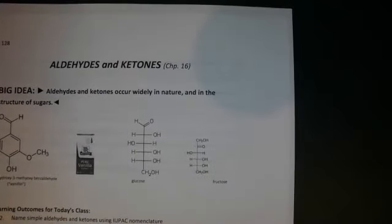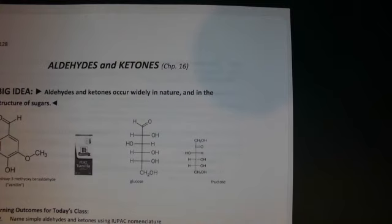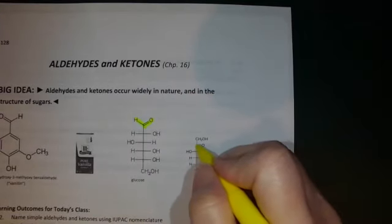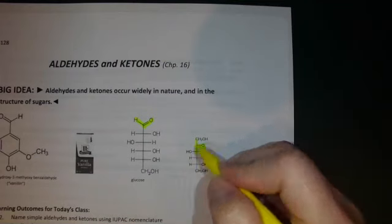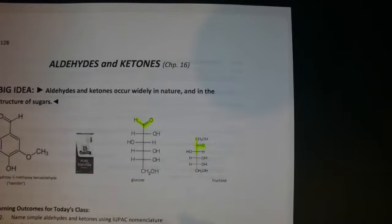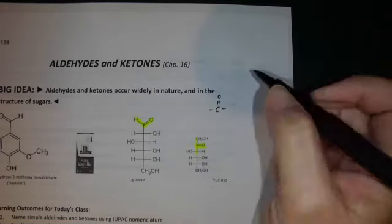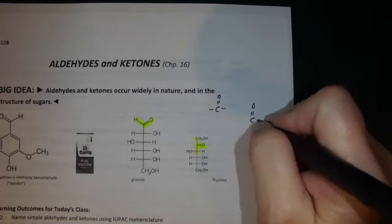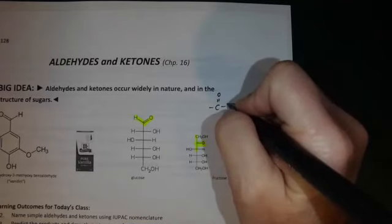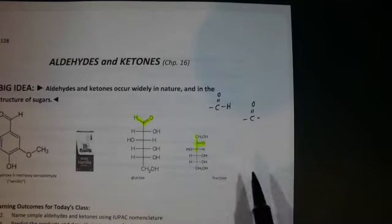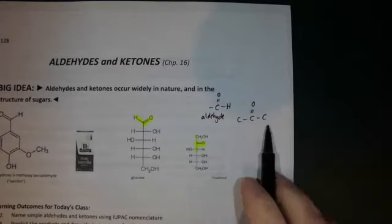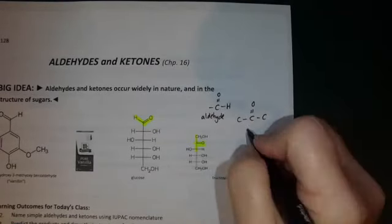Take a look at the structures at the top — two common sugars: glucose and fructose. Glucose has an aldehyde functional group; fructose has a ketone functional group. Both have a carbon double-bonded to oxygen. Carbon makes four bonds; if two go to oxygen, the remaining two determine the functional group. If one or both remaining bonds go to hydrogen, that's an aldehyde. If both go to carbon, that's a ketone.